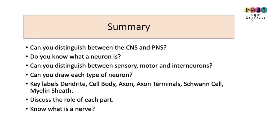That's the end of part one of the nervous system. Make sure you can distinguish between the central nervous system and the peripheral nervous system, that you know neurons are nerve cells, and that you know the difference between sensory, motor, and interneurons.